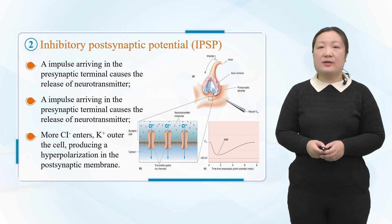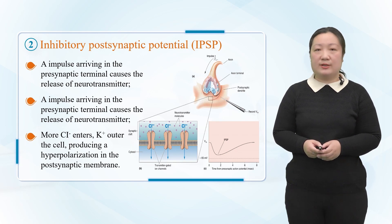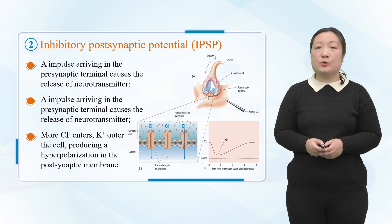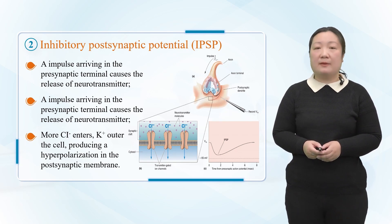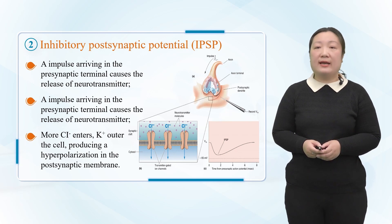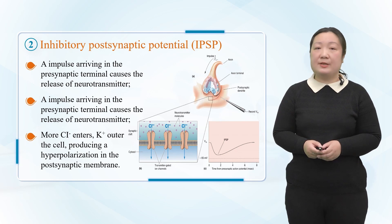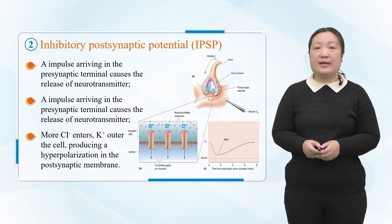The second concept is IPSP. When inhibitory interneurons are excited, their terminals release inhibitory chemical transmitters. The transmitter reaches the post-synaptic membrane and binds to the receptor on the post-synaptic membrane, which increases the permeability of the post-synaptic membrane to K⁺, Cl⁻, especially Cl⁻. K⁺ outflows and Cl⁻ inflows, so that hyperpolarization occurs. This hyperpolarization potential is called inhibitory post-synaptic potential (IPSP). This process is called inhibitory synaptic transmission.